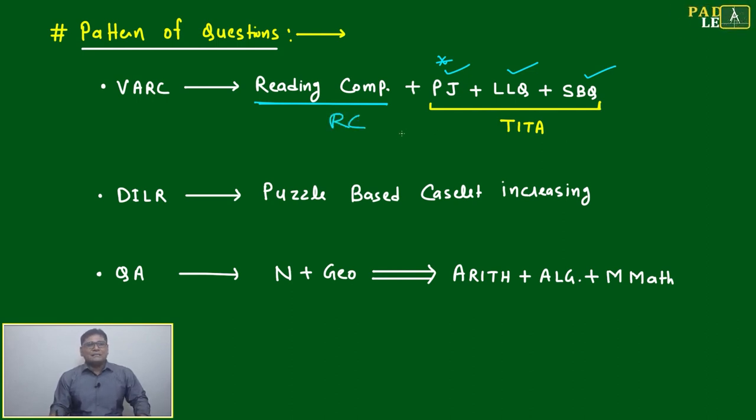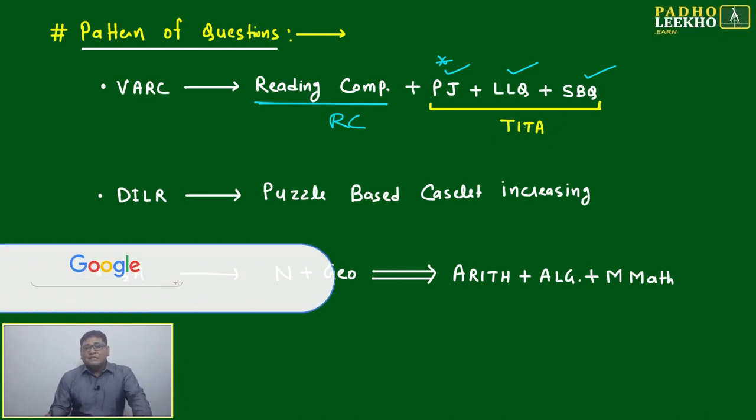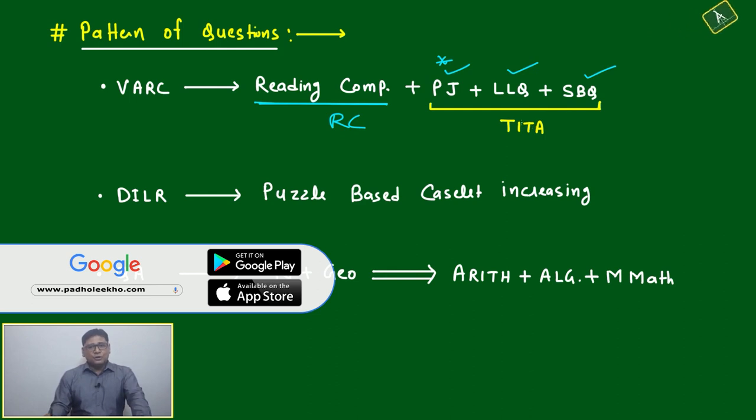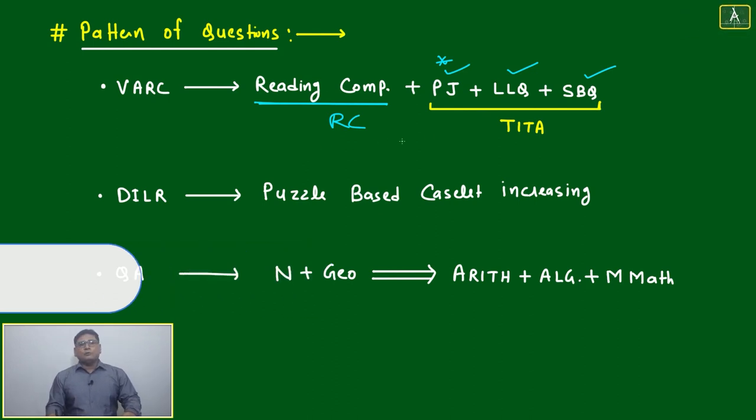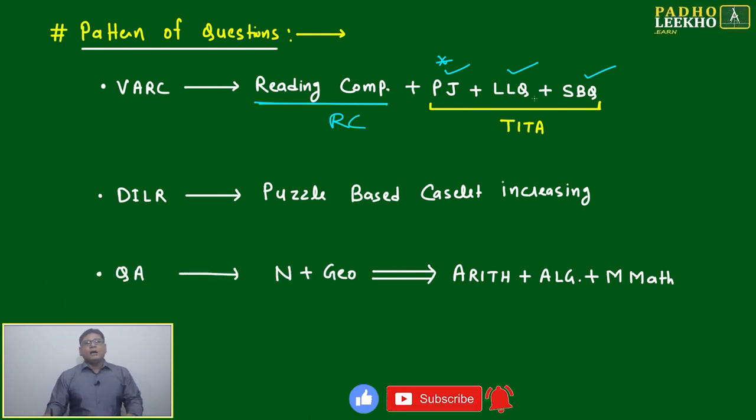The problem is you are not sure if you are scoring well or not, so you must depend on RC and perform well there. If you compare last line questions, summary-based questions, and para jumbles, para jumbles are where you will be most certain.